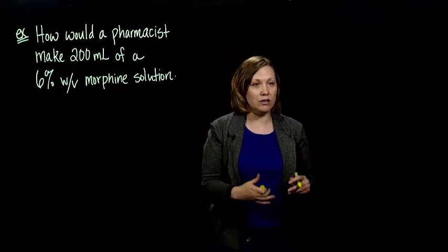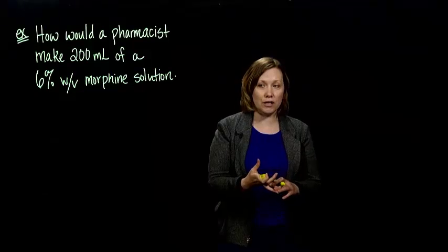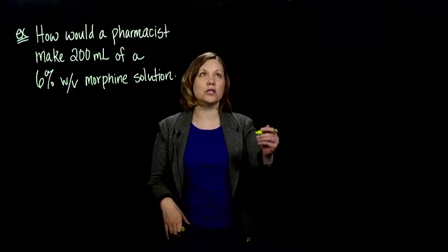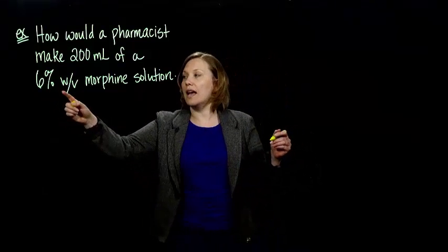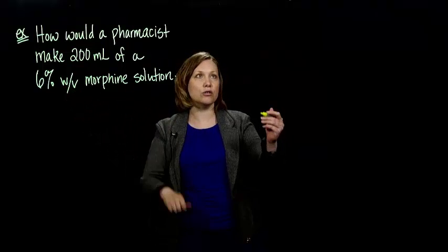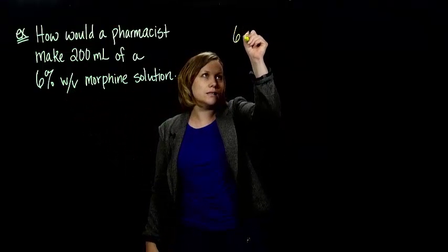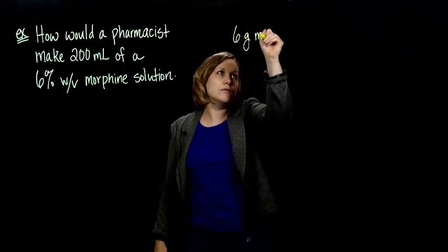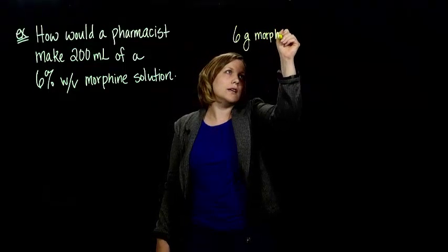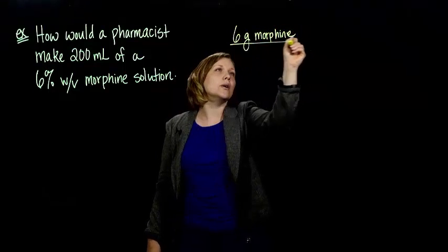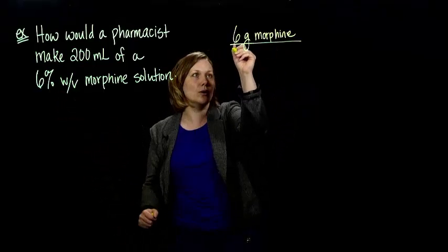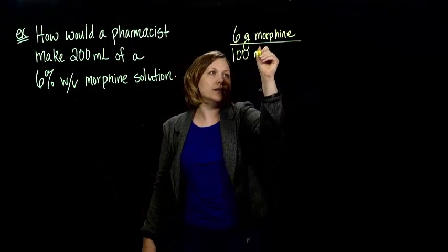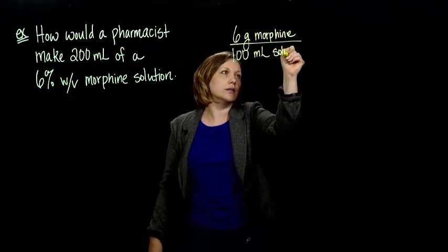Again, you can set this up in a couple of ways. You can use proportions or you can use an equation. If we want to use proportions, a 6% weight per volume solution means we want 6 grams of morphine per—percent is per 100—100 milliliter solution.